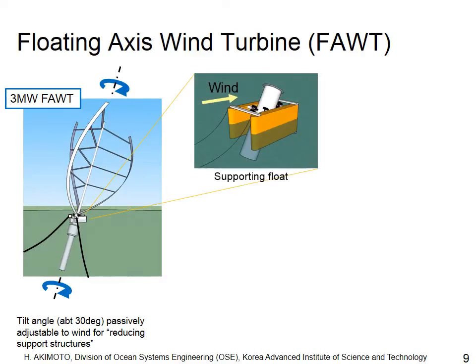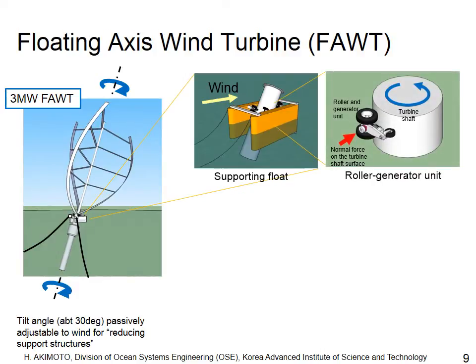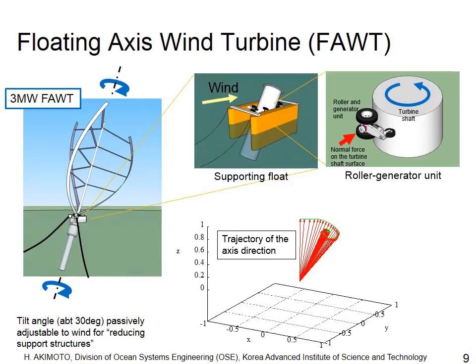Power takeoff units are on a small float surrounding the turbine shaft. The mechanism of the power takeoff unit is similar to the regenerative braking system of an electric vehicle. The heavy rotor shows a gyroscopic effect on the attitude of the turbine. When the turbine axis is released from the upright position, it moves in a spiral to the balanced position.